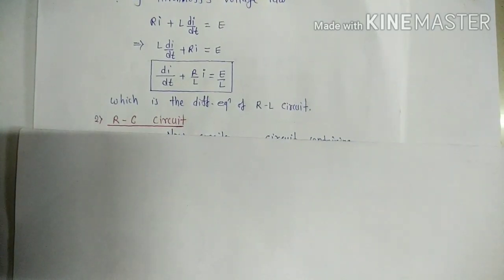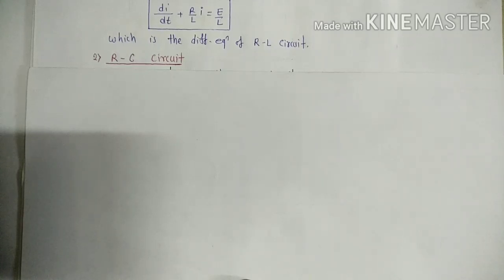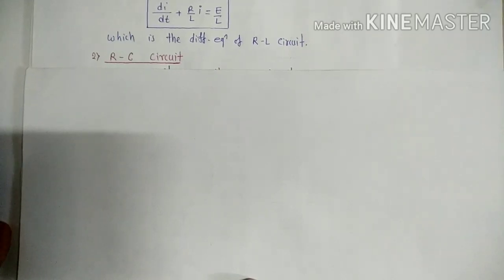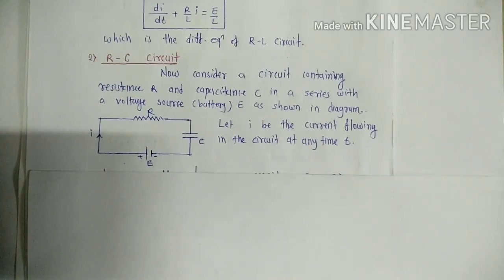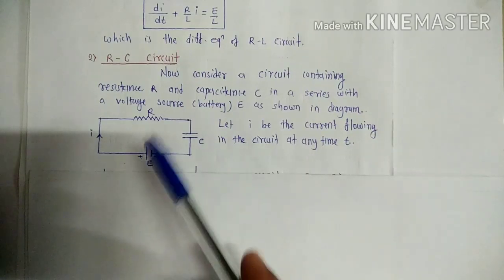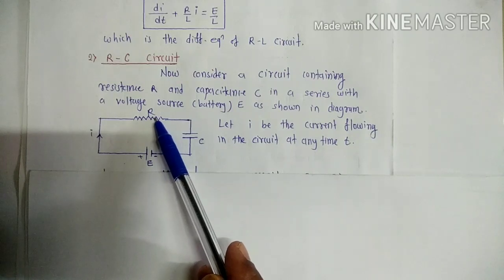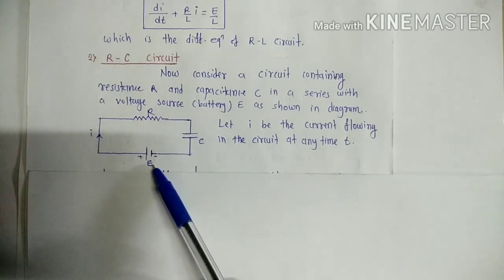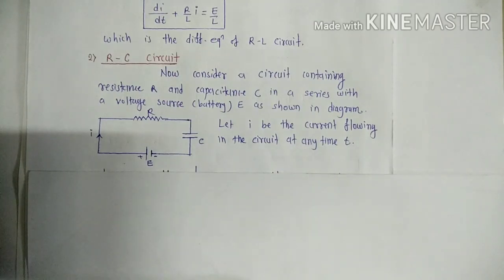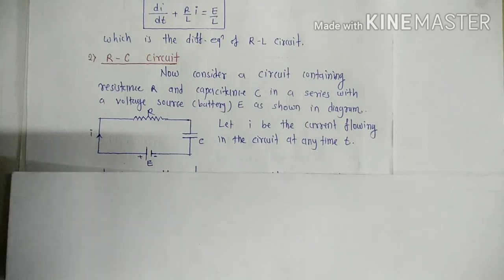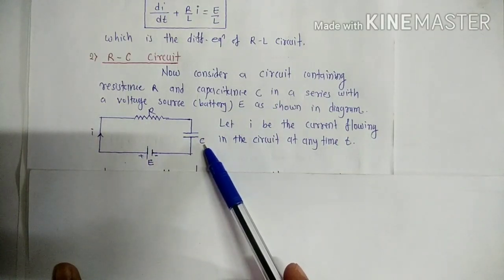Now we discuss how to construct a differential equation for an electrical circuit consisting of resistance R and capacitance C — that is, the RC circuit. Consider an electrical circuit containing resistance R and capacitance C connected in series with a voltage source E, as shown in the diagram. The voltage drop across resistance R is Ri, and the voltage drop across the condenser of capacity C is Q/C.